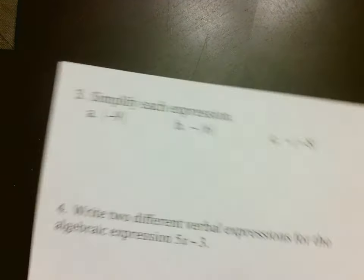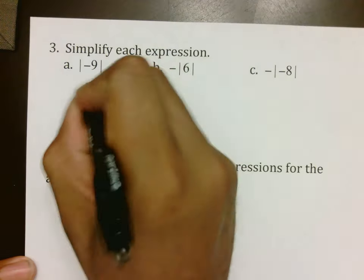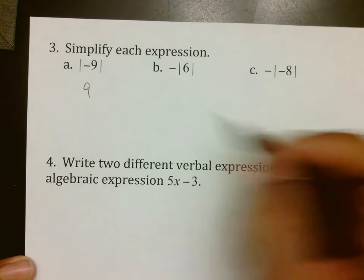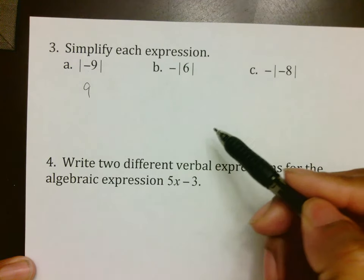Moving into the ones on number 3, which is your absolute value work. We know that the absolute value of 9 is 9, but here's what you have to keep in mind. The absolute value kills the negative on the inside, not the outside.